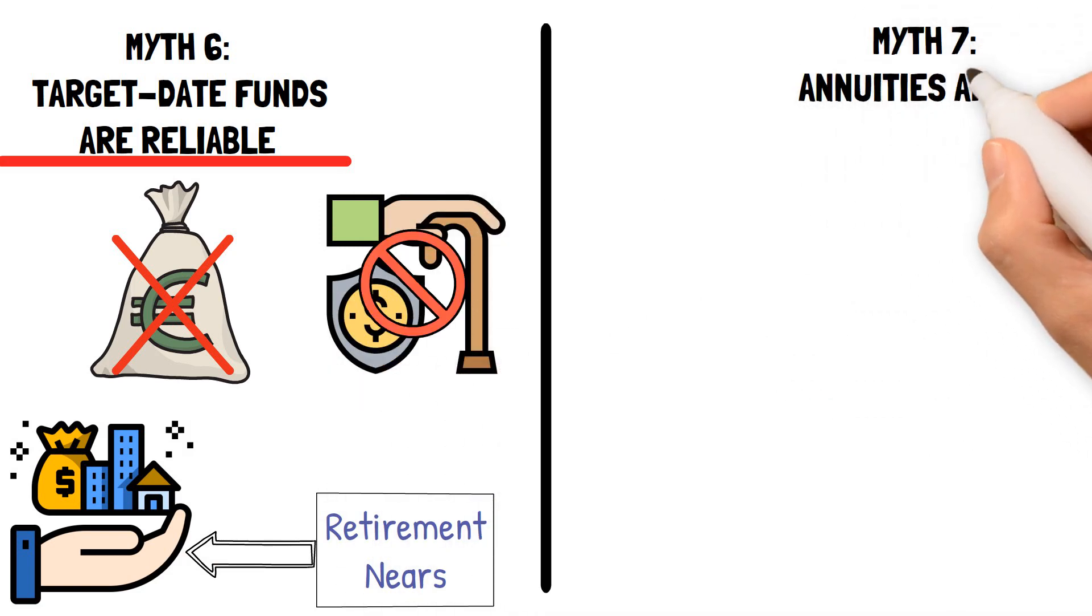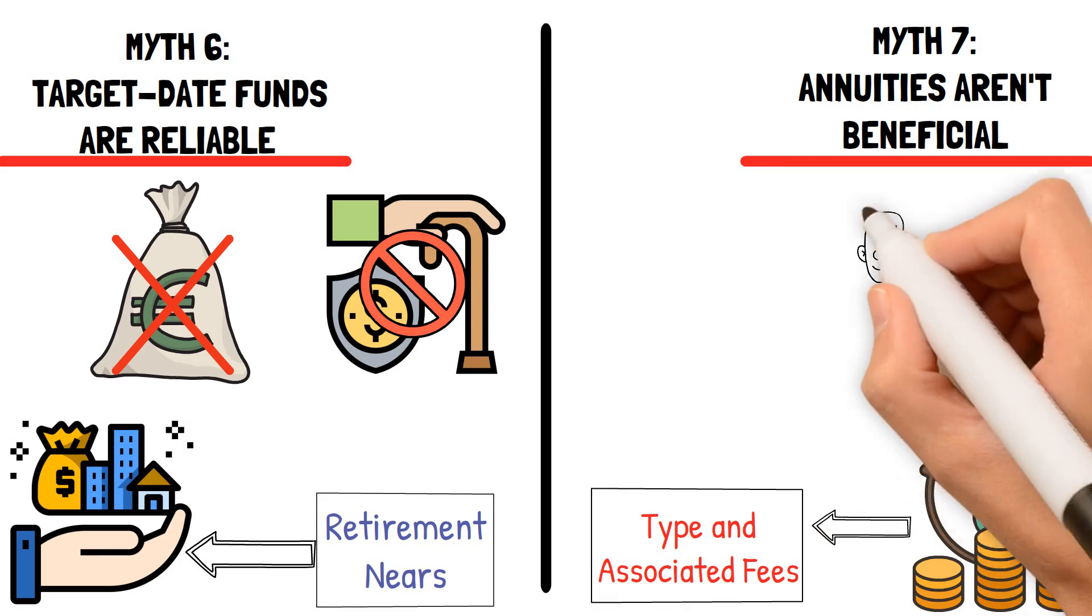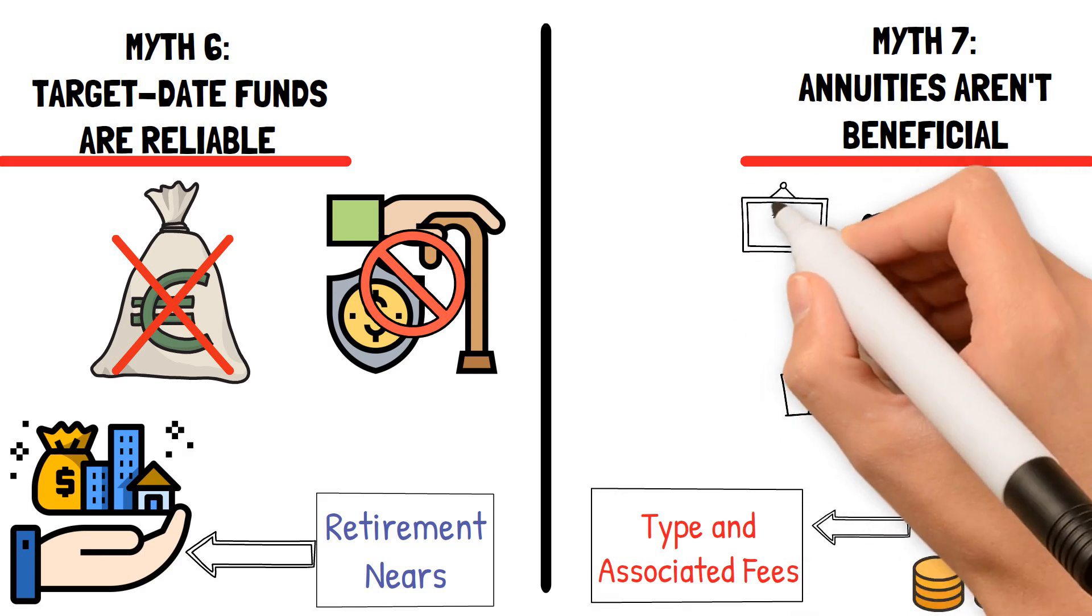Myth 7: Annuities aren't beneficial. Annuities' effectiveness varies based on their type and associated fees. Variable annuities might not be favorable, but it's essential to have them annually reviewed by a specialist.